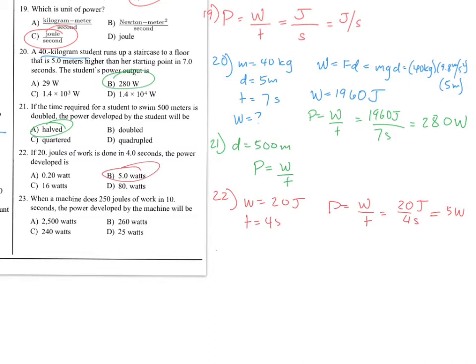Number 23. Last on this page. If the work is 250 joules. Time is 10 seconds. Another plug and chug. Work over time. 250 joules over 10 seconds. Divide by 10. Here's a shortcut. 25 divided by 1 is 25 watts. Choice D.